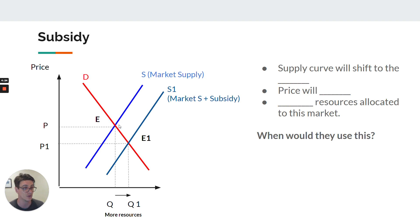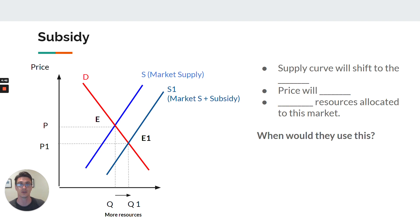Why would the government want to use subsidies? They're going to use this for the same reasons as direct provision — correcting an under-allocation or under-production. So public goods, positive externalities. There's a little bit extra here: the government could actually use subsidies to encourage the production of a substitute for a good with a negative externality. We'll come back to that in a later video.